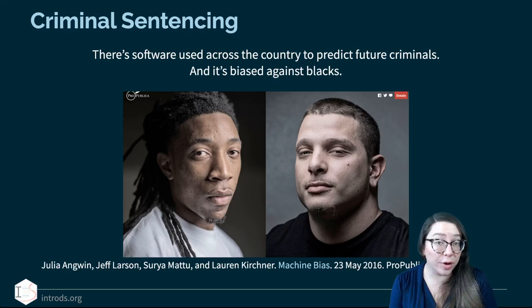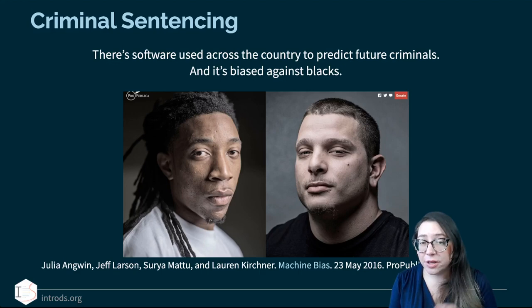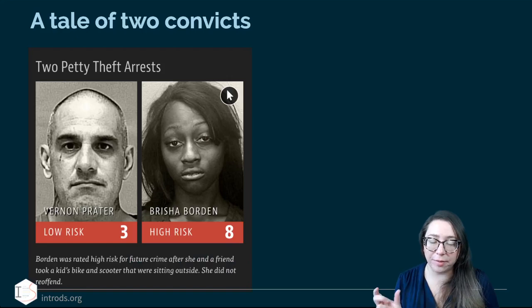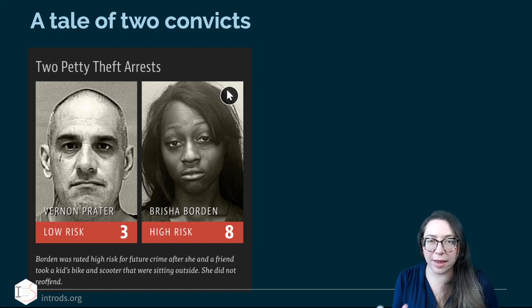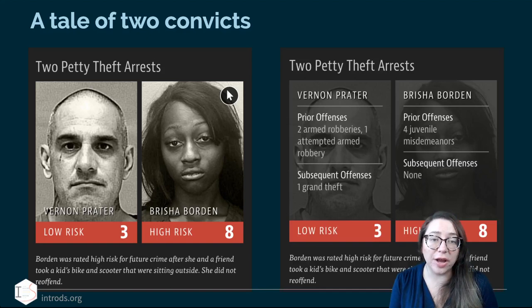Another example of racial algorithmic bias comes in criminal sentencing. A 2016 ProPublica article titled 'Machine Bias' stated: 'There's software used across the country to predict future criminals and it's biased against blacks.' The article presents two pictures — a white male and a black female. One was labeled low risk (the white male) and the other high risk. When we think about risk here, they're asking: would they commit a crime again? Bricia Borden was rated high risk for future crime after she and a friend took a kid's bike and scooter that were sitting outside.